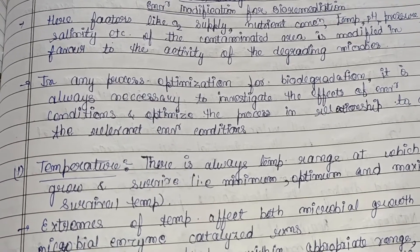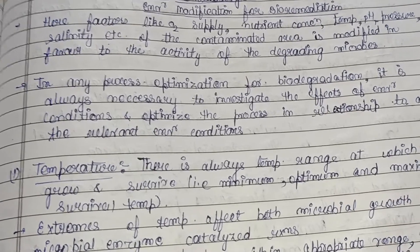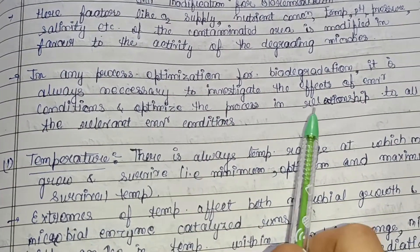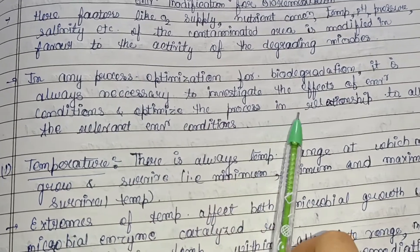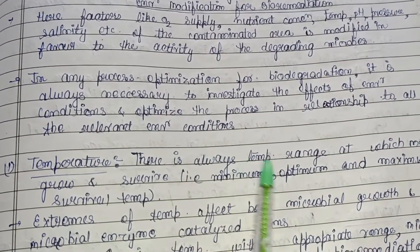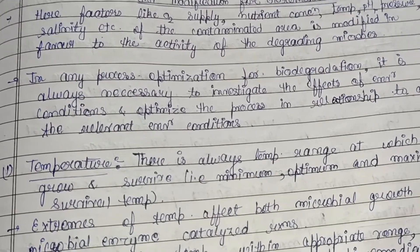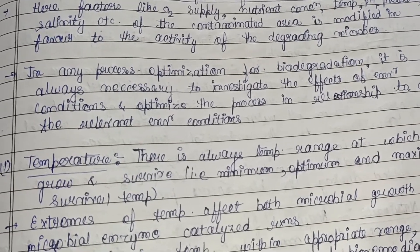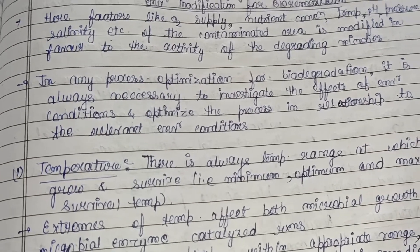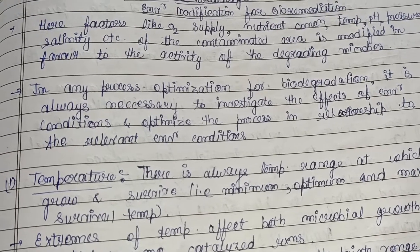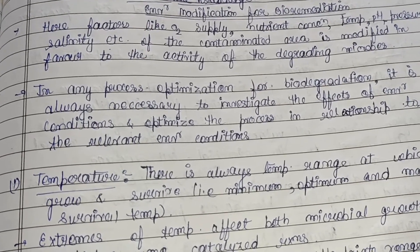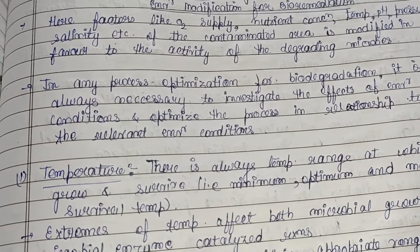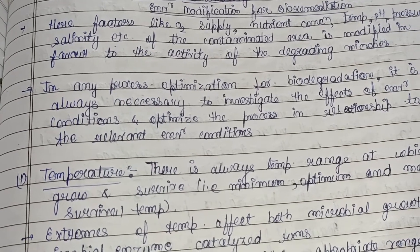In any process optimization for biodegradation, it is always necessary to investigate the effects of environmental conditions and optimize the process in relation to all relevant environmental conditions. We have to test whether particular microbes — bacteria or fungi — can act in a particular environment, and whether those environmental conditions are suitable for their activity. Environmental modification is the process of providing certain conditions for particular microbes so they can perform their activity easily and more effectively.